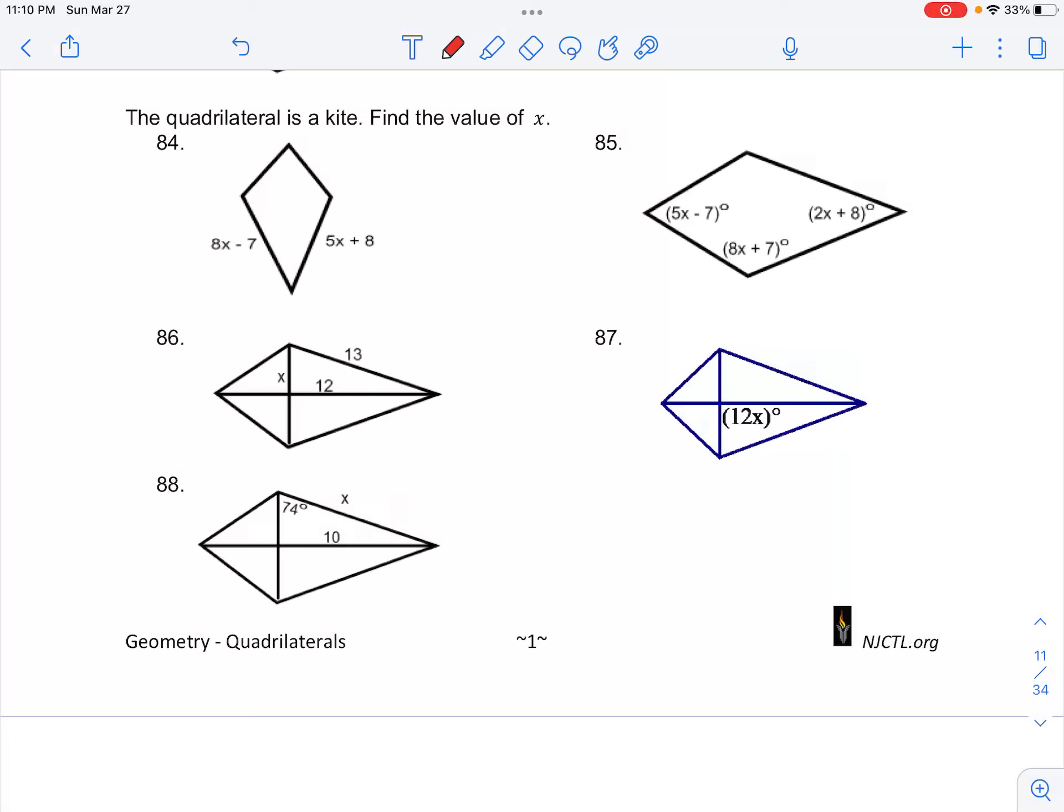Number 88 in your classwork for kites asks you to find the value of x. We know that the diagonals of a kite come to intersect as perpendicular lines, so they will form a right angle, which means that we make a right triangle.